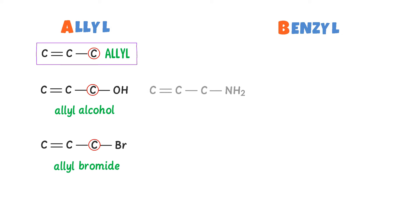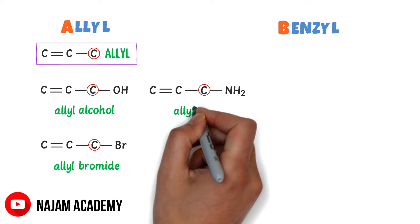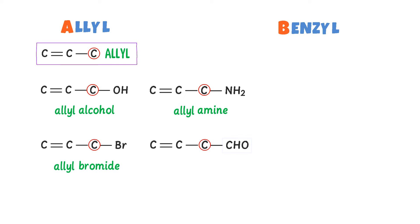Thirdly, consider this organic compound — here this is the Allyl carbon. The functional group NH₂ is bonded to the Allyl carbon, so I write Allyl amine. Fourthly, consider this organic compound — this is the Allyl carbon. The functional group CHO is bonded to the Allyl carbon, so I write Allyl aldehyde.